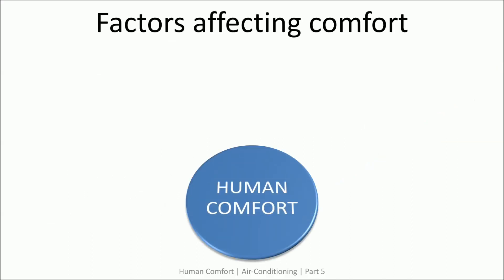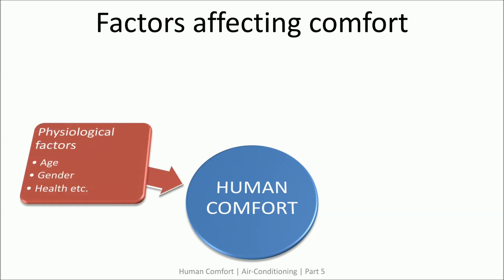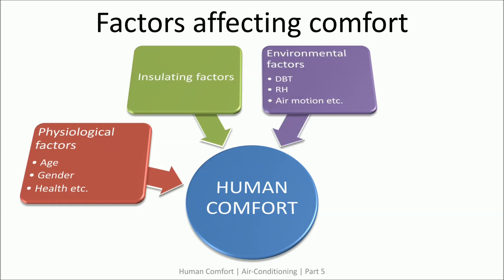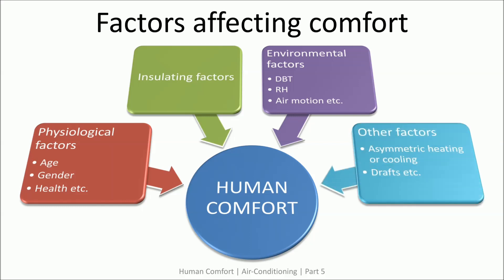Human comfort depends on a number of factors. The physiological factors include the person's age, gender, and state of health, among others. The clothing we wear acts as a barrier against heat gain or loss. Then there are environmental factors, namely dry bulb temperature, relative humidity, air velocity, etc. Apart from these, there are other factors like non-uniform heating or cooling and air draft.